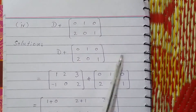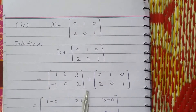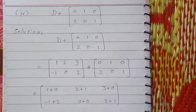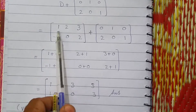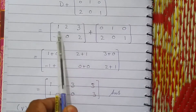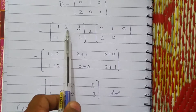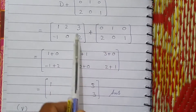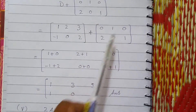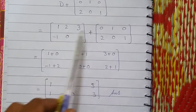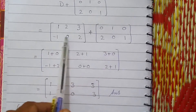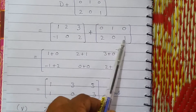We are working on D plus this matrix. Here we have put the value of D and this matrix and we are adding the corresponding elements. The corresponding element to this element is this, so these elements are added. The corresponding elements are matched with respect to their positions in the matrices.